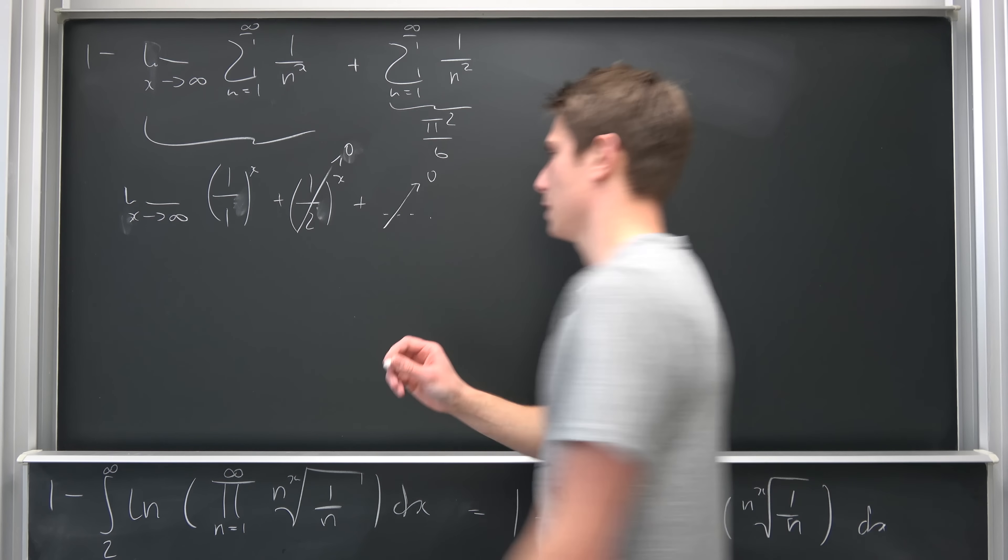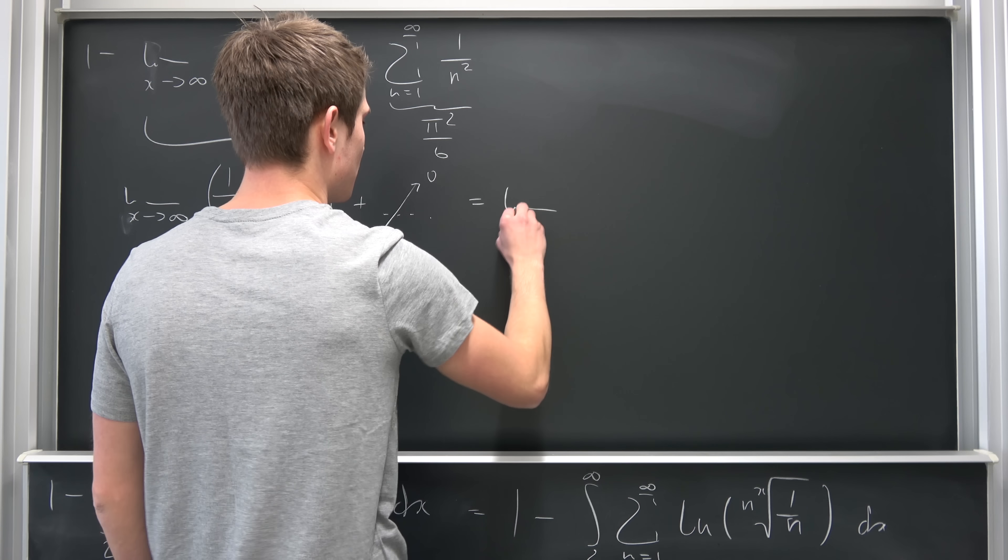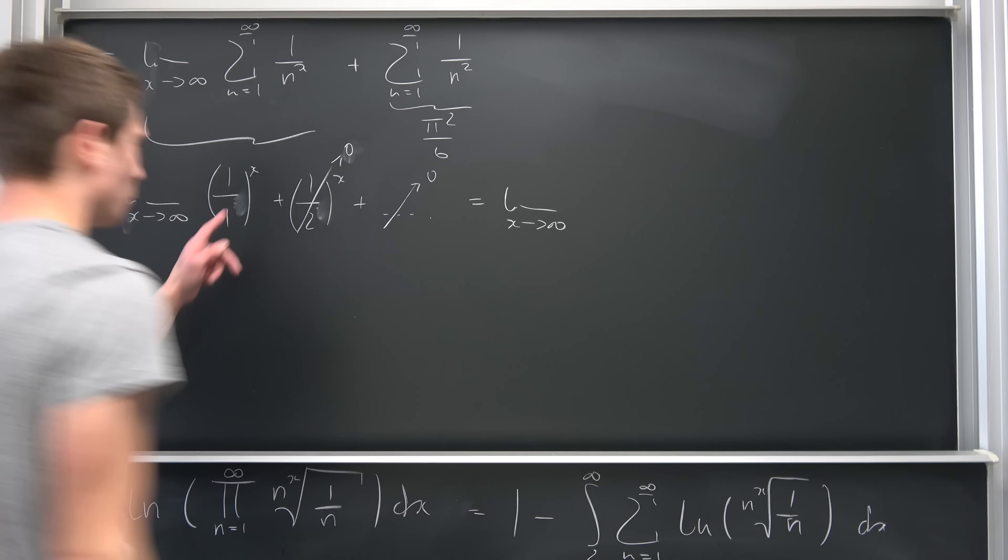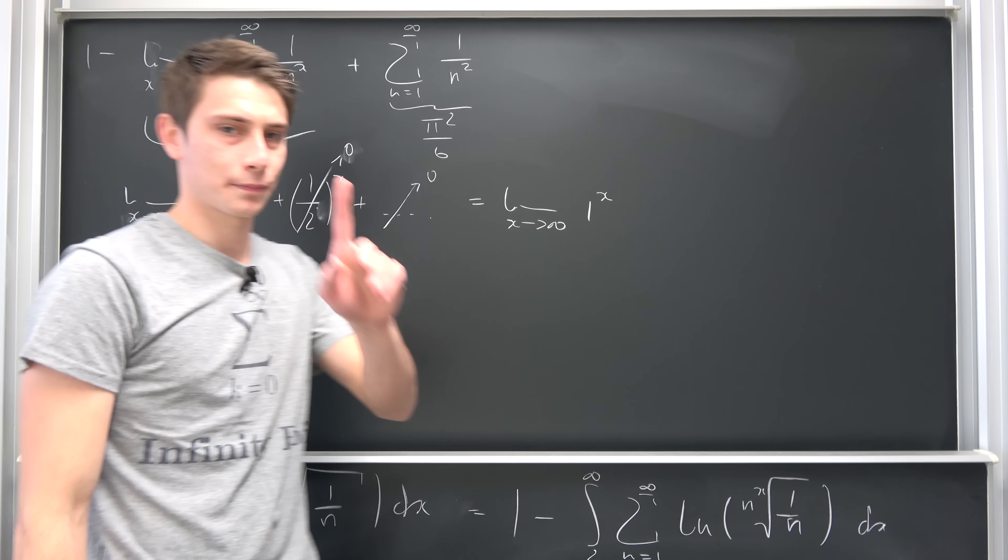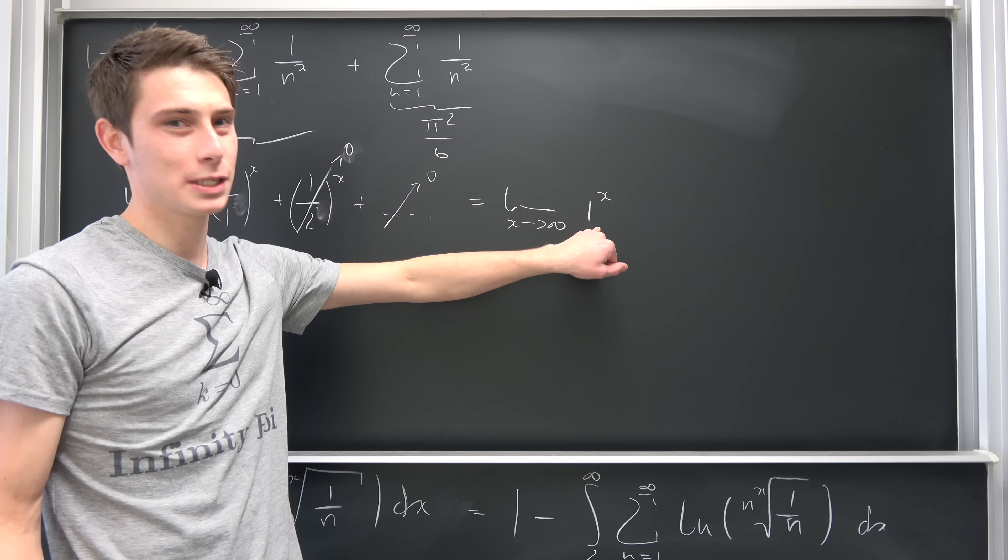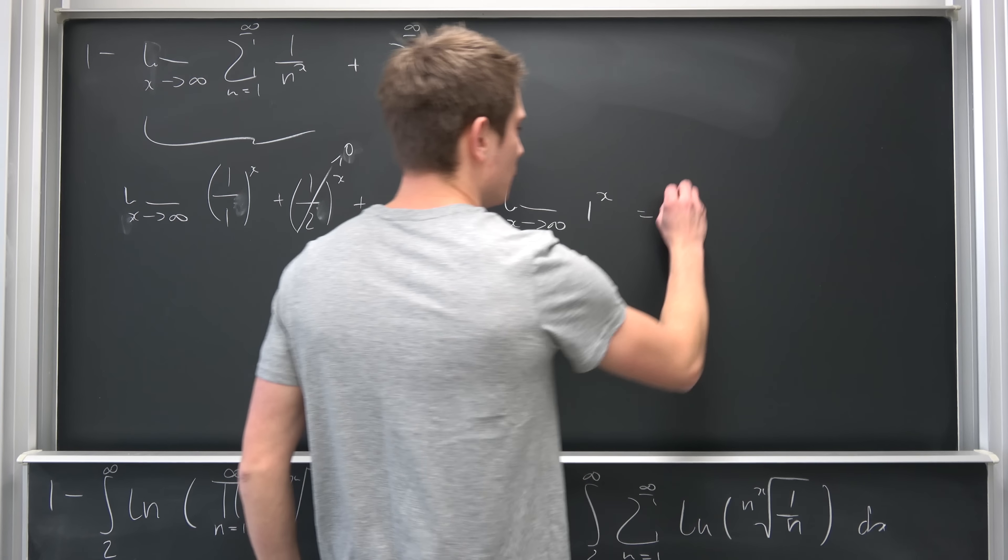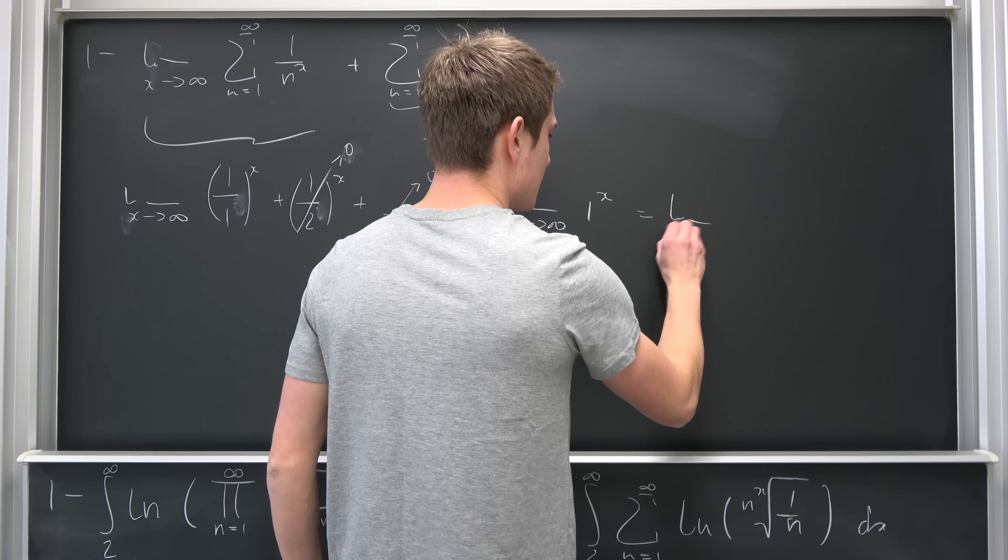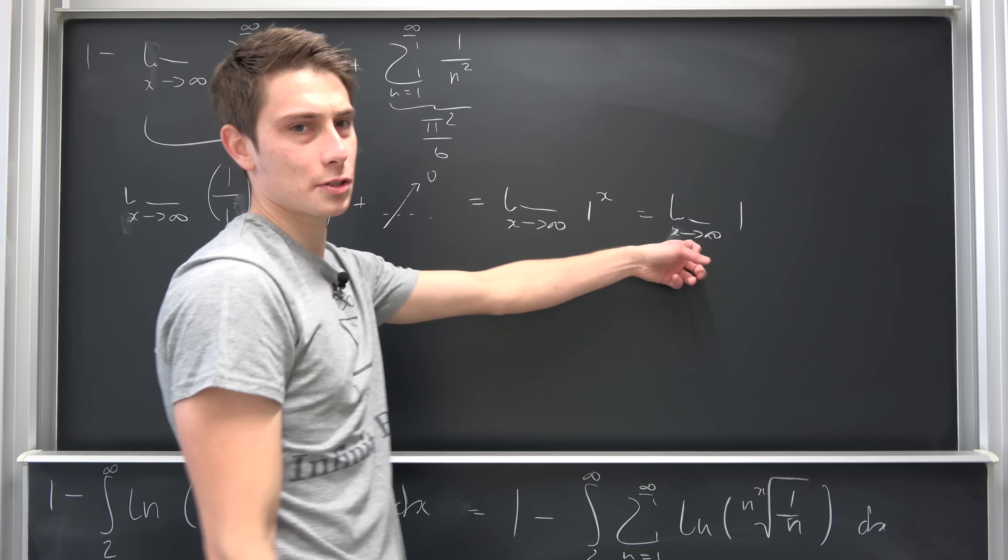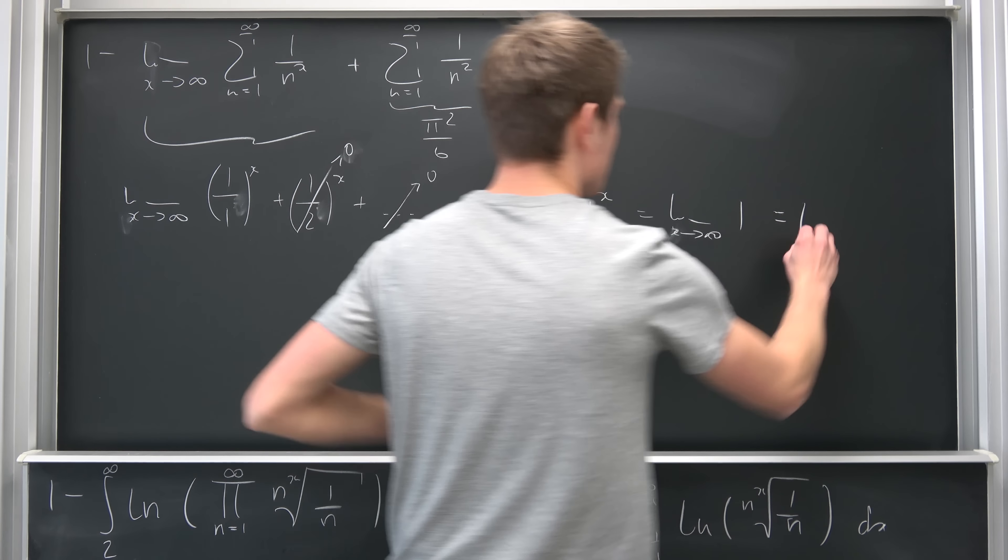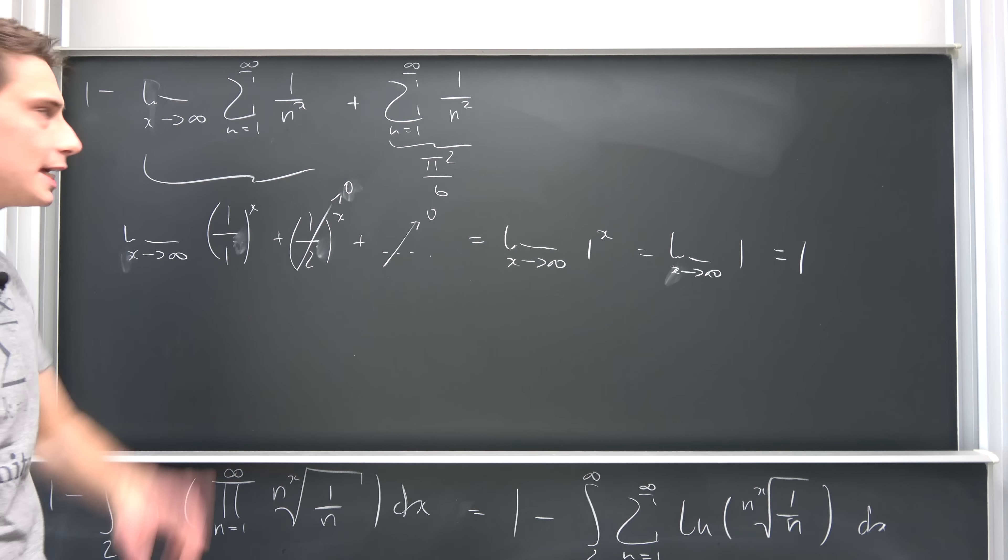So all those terms are going to 0. But what are we going to get here? So we are going to end up with the limit as x approaches infinity, 1 over 1 is nothing but 1 to the x power. Just like I said, 1 to the something power doesn't matter, it's just going to give us 1. So this is the limit as x approaches infinity of just 1, and the limit of a constant is just the constant itself. So this is 1.